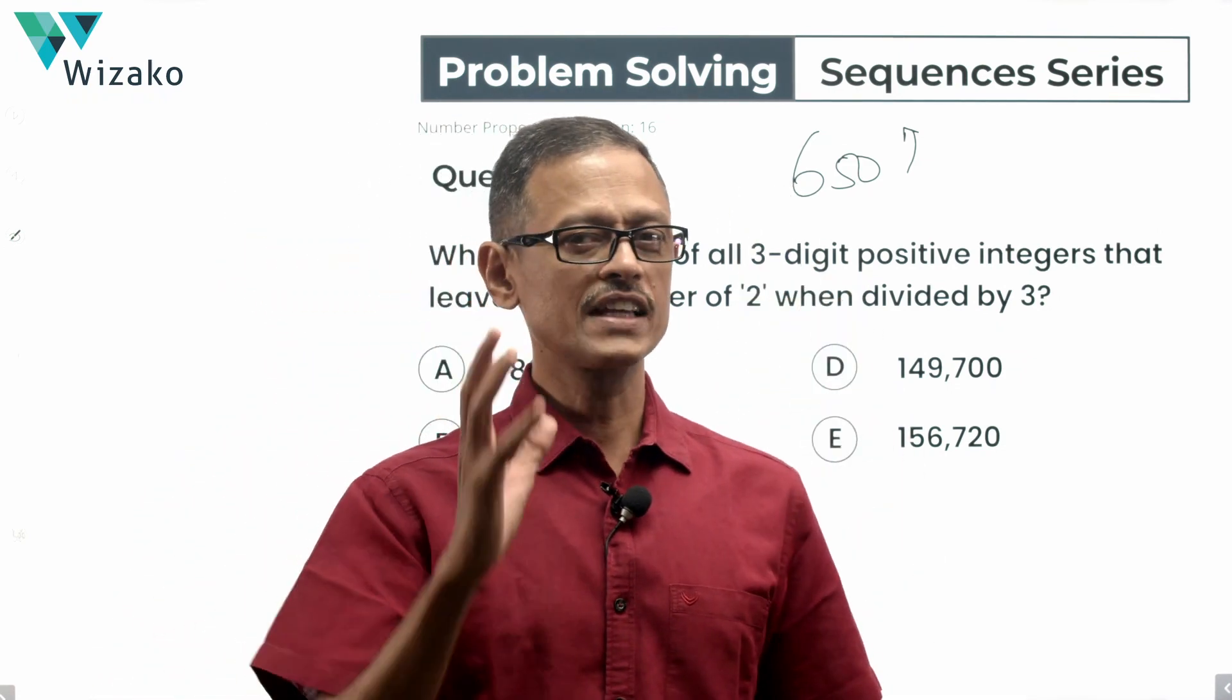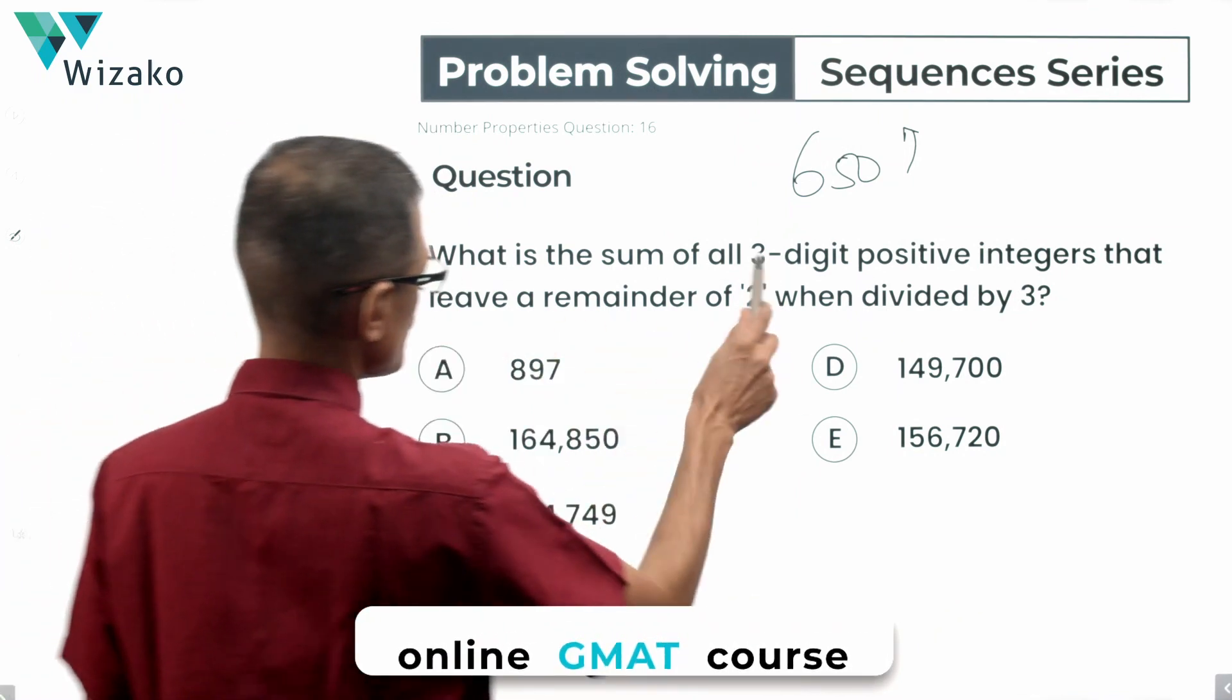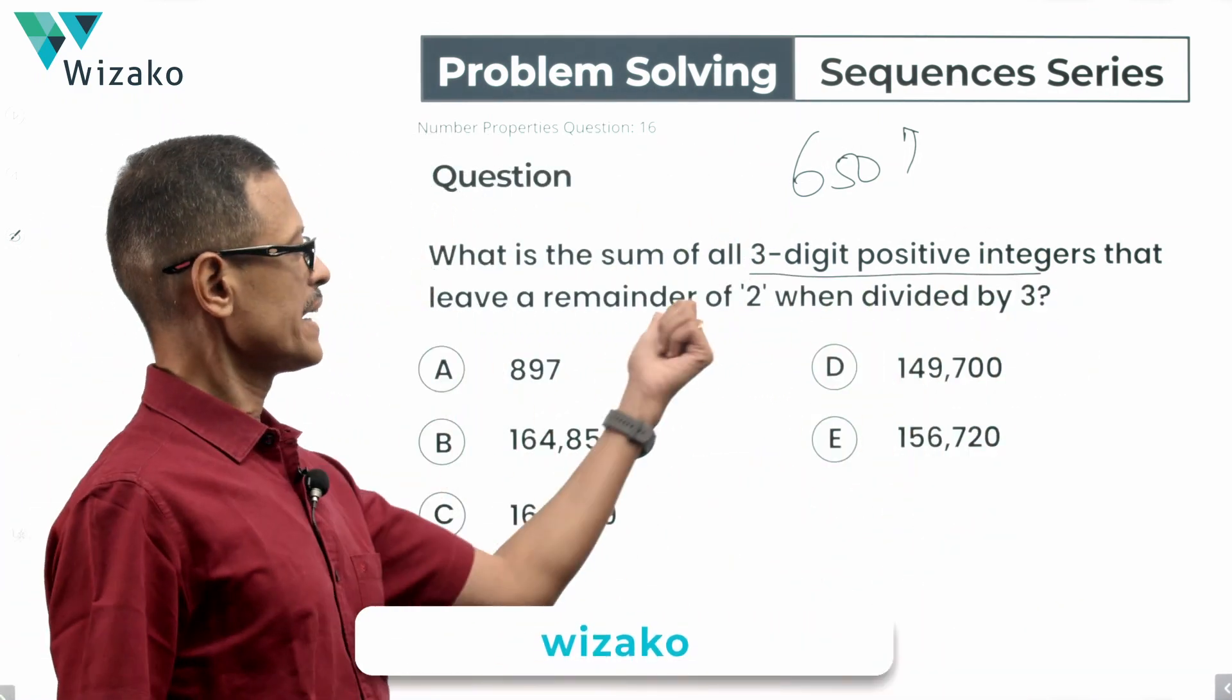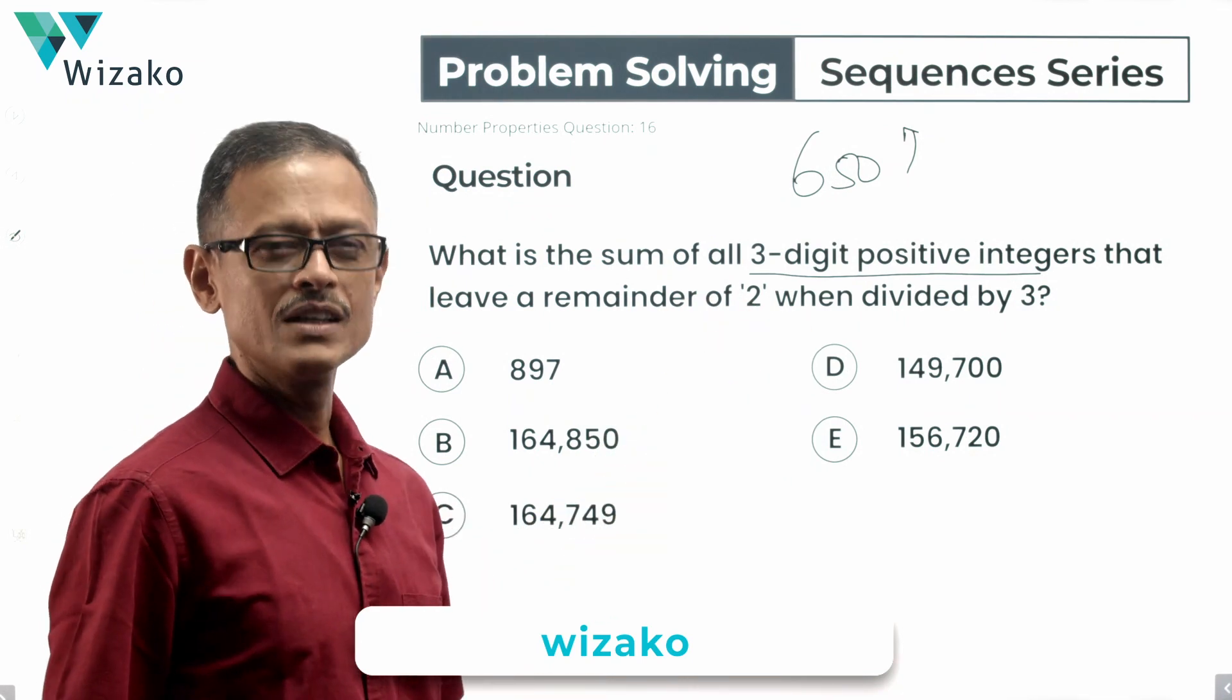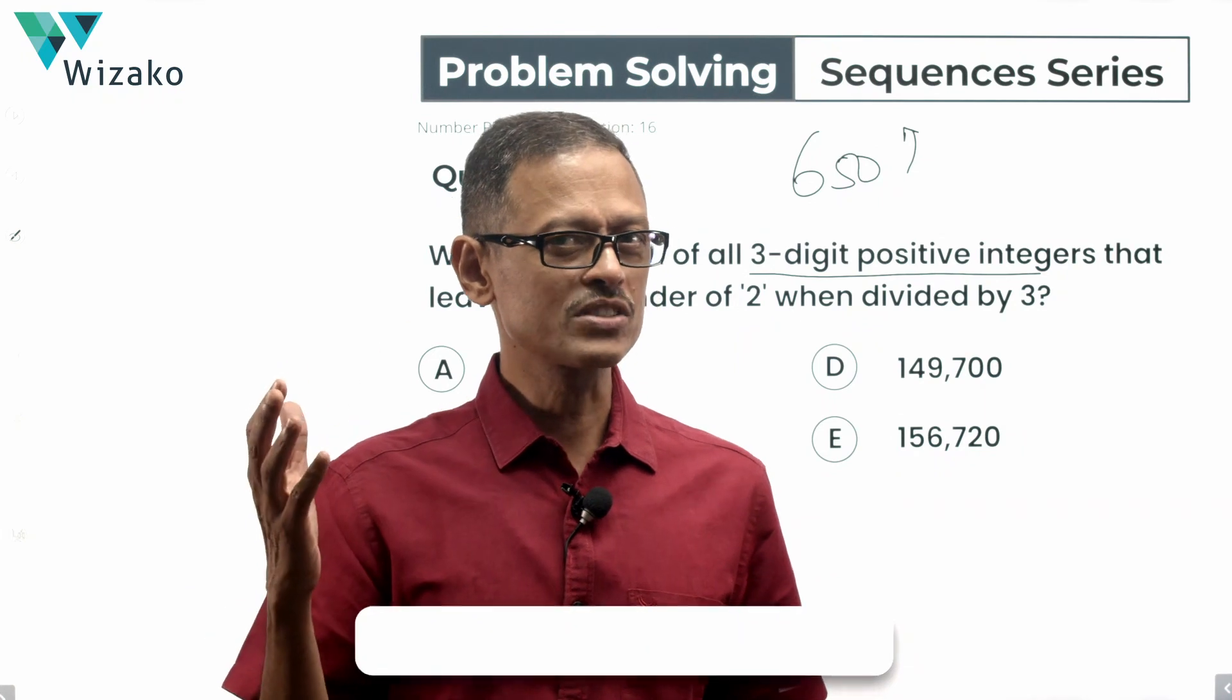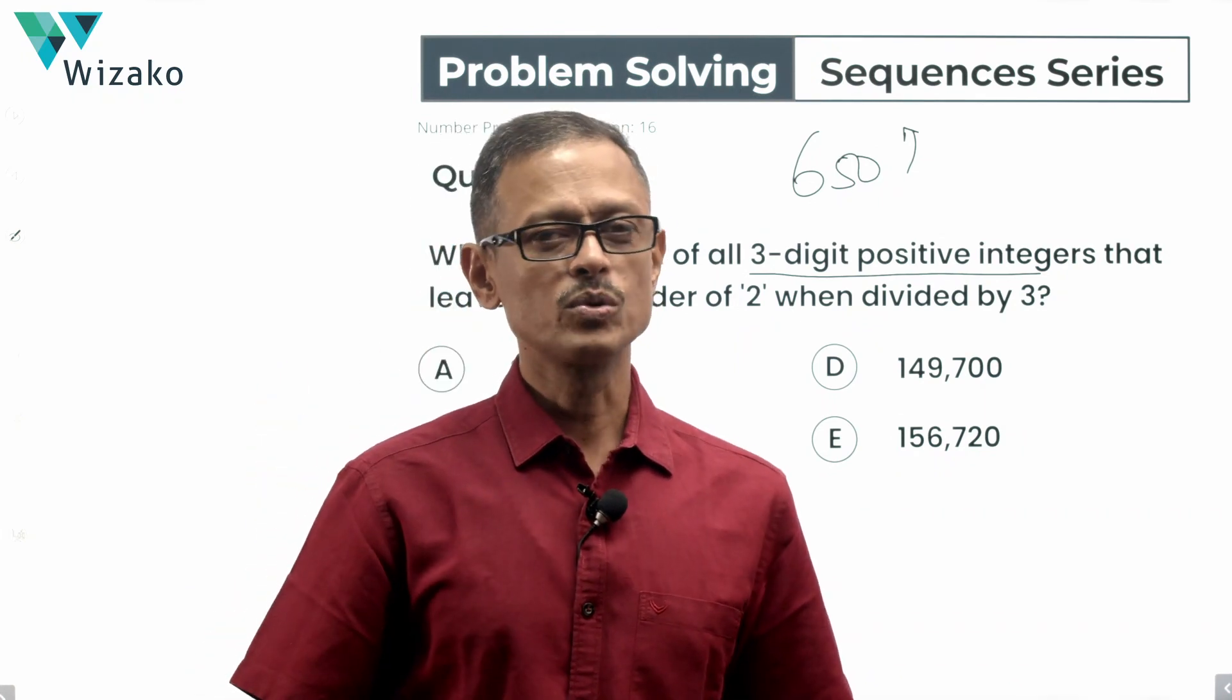This is about sequences and series, specifically arithmetic progressions. What is the sum of all three digit positive integers that leave a remainder of two when divided by three? What does the sequence comprise? Three digit positive integers. All three digit positive integers? No. Those three digit positive integers that leave a remainder of two when divided by three.